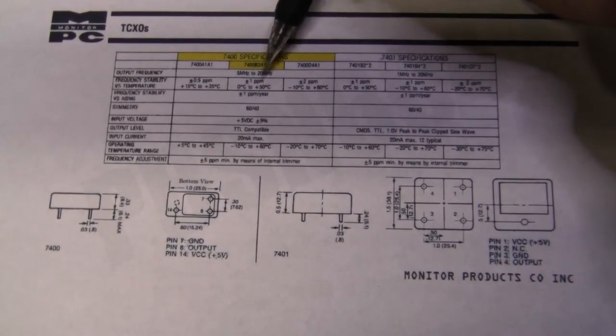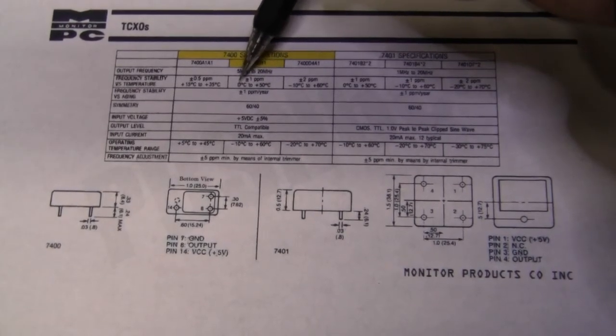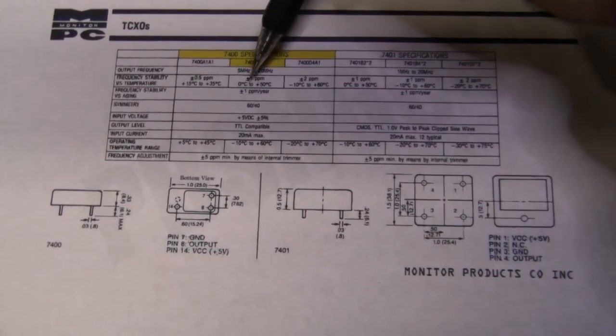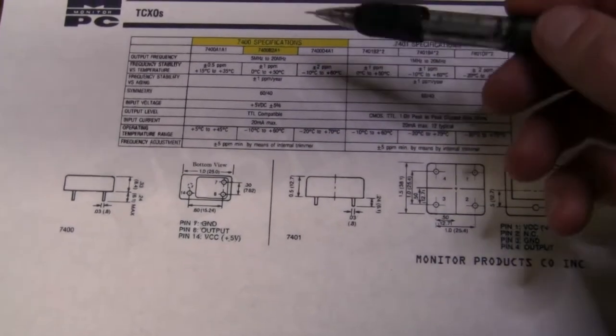within range of temperatures from 0 to 50 degrees C, and they can drift up to plus minus 1 ppm per year.